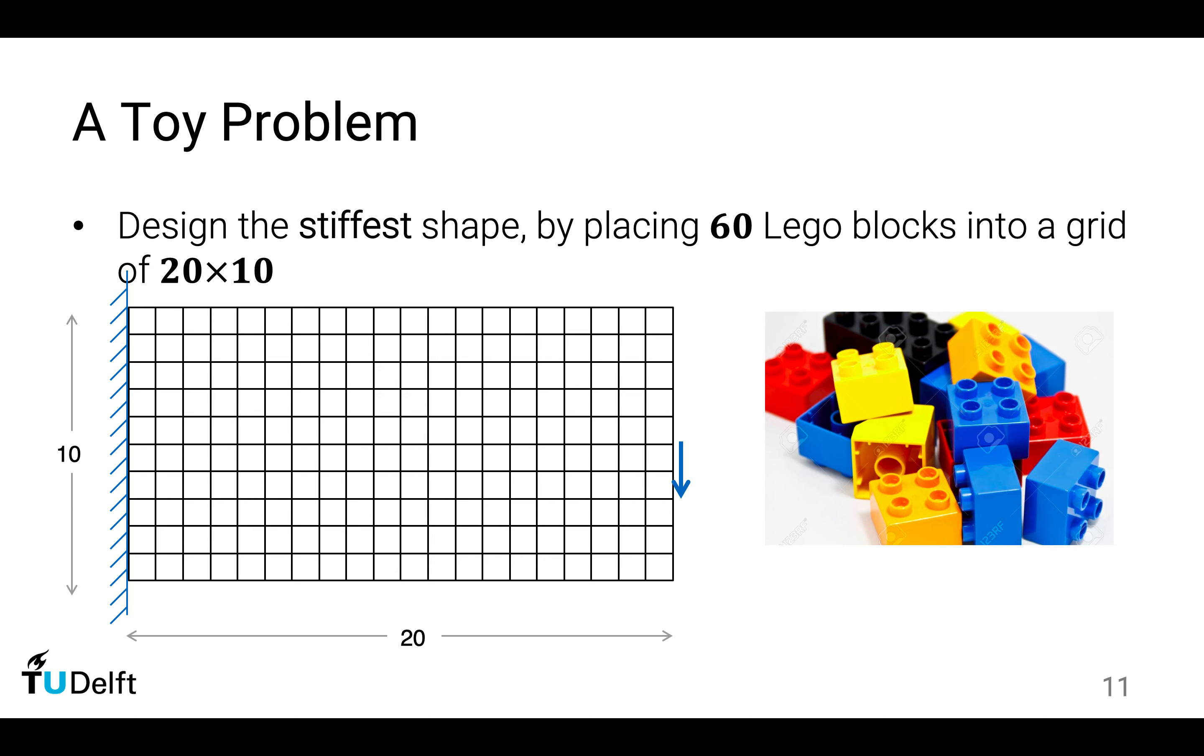If we have 200 blocks, that's very easy. We just make the entire structure solid. But now, we don't have as many as we want. Suppose we have only 60. We have to place these 60 blocks in a very clever way, such that when a force is applied, the deformation is small, or the stiffness is very high. And this is what we want to find out.